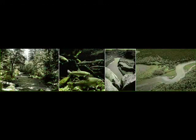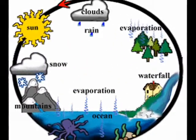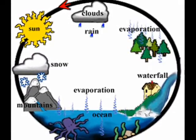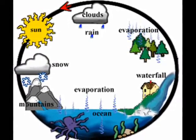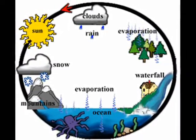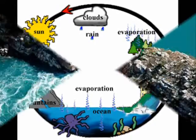Streams and rivers can be found everywhere. They get their starts at headwaters, which may be springs, snowmelt, or even lakes. And then they travel all the way to their mouths, usually using another water channel or the ocean. The characteristics of a river or stream change during the journey from source to mouth.